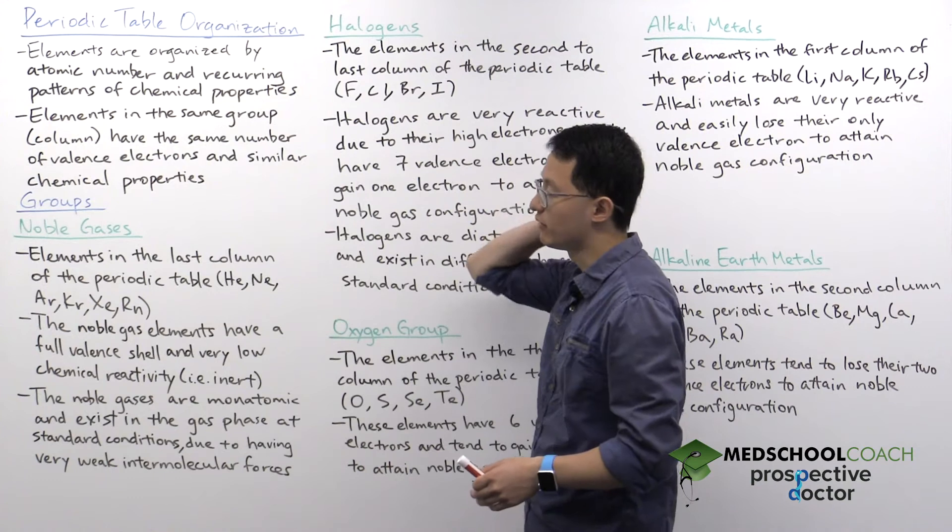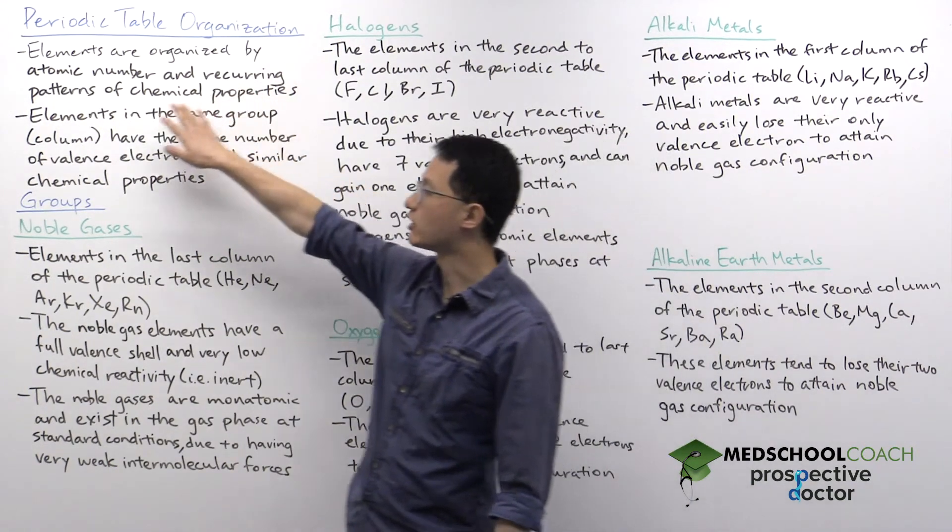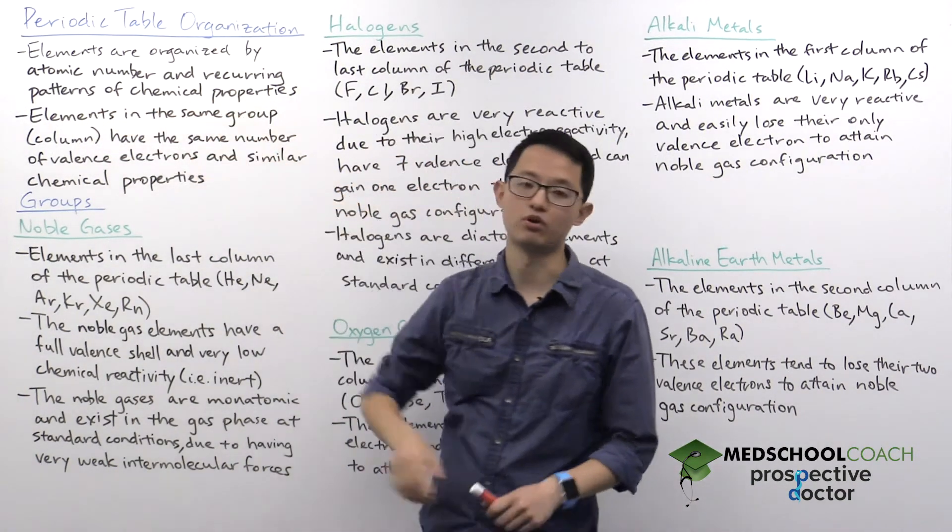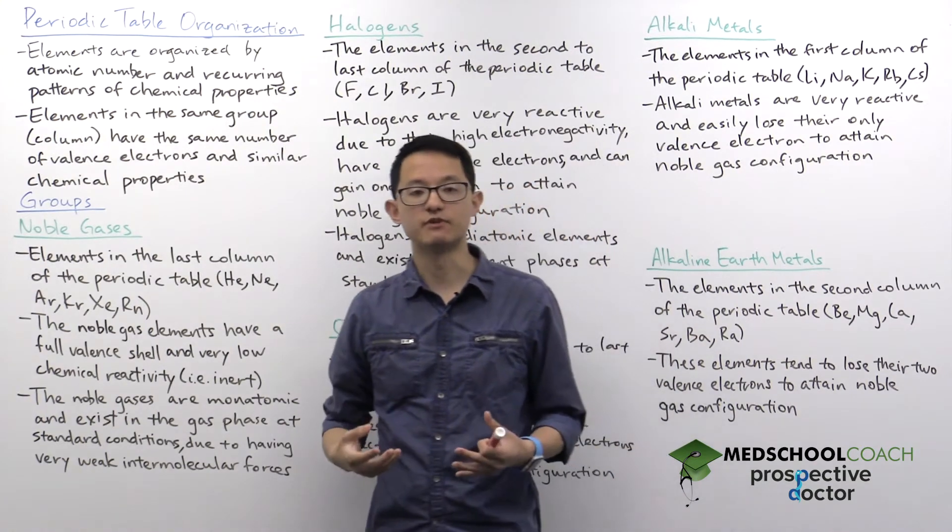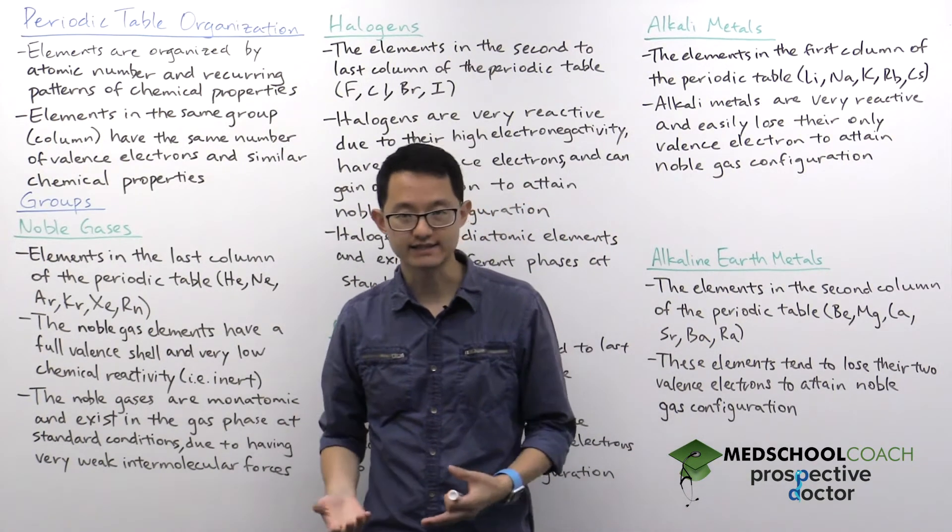The other way that the periodic table is organized is by recurring patterns of chemical properties. And this you've seen before, hearing terms such as the noble gases,